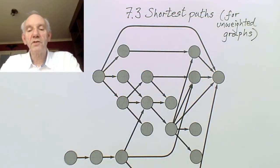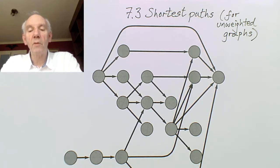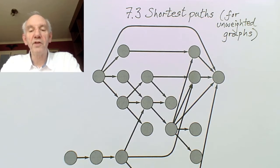In this video I want to start talking about how one finds shortest paths from a given vertex to all the other vertices in a graph. This will lead us next week to talk about Dijkstra's algorithm, which does this very effectively and a variant of it would be used for things like sat navs and Google Maps and so forth.